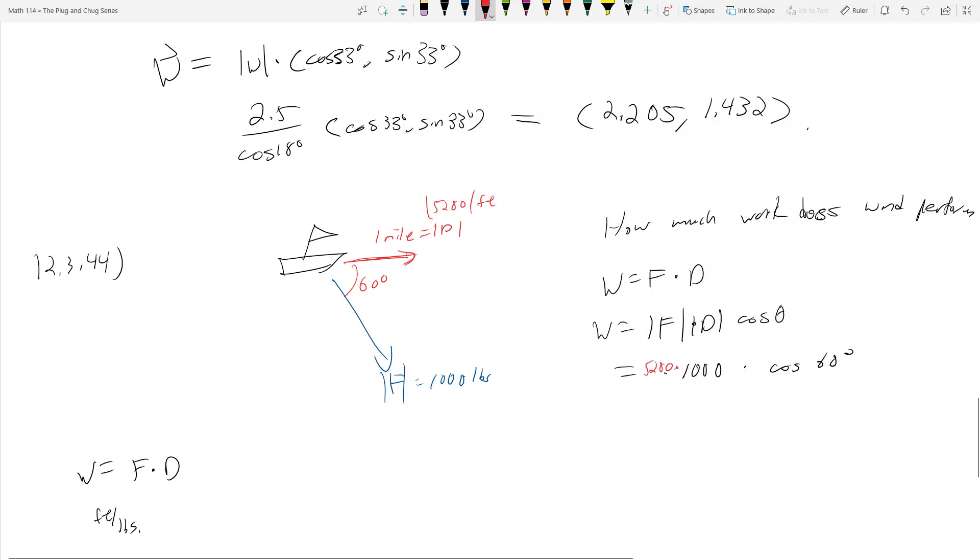So this is equal to 5280 times 1000. Cosine 60 is one-half, so the final answer is going to be 2,640,000 foot-pounds, which is the amount of work done.